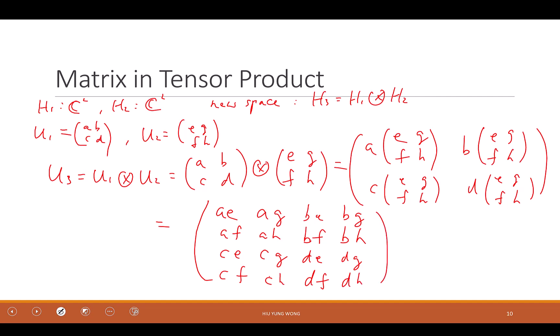It's that easy. But does it make sense? What is the dimension now for this matrix? 4 by 4. Should we expect a 4D dimension here? Yes. Right? Because this one is C2, tensor product C2, which should be C4. Right? So everything makes sense. Yeah.